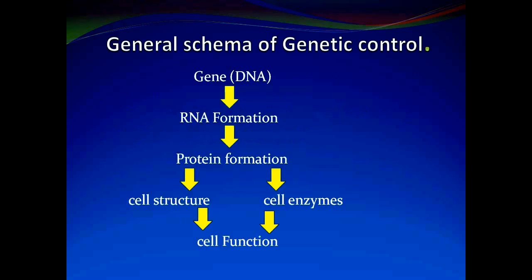This is a simple genetic schematic diagram that represents how genetic control is seen in our body. The genes are concerned with RNA formation, RNA is concerned with protein formation, and protein formation concerns cell structure and cell enzymes. Cell structure and cell enzymes then decide the cell's basic function.